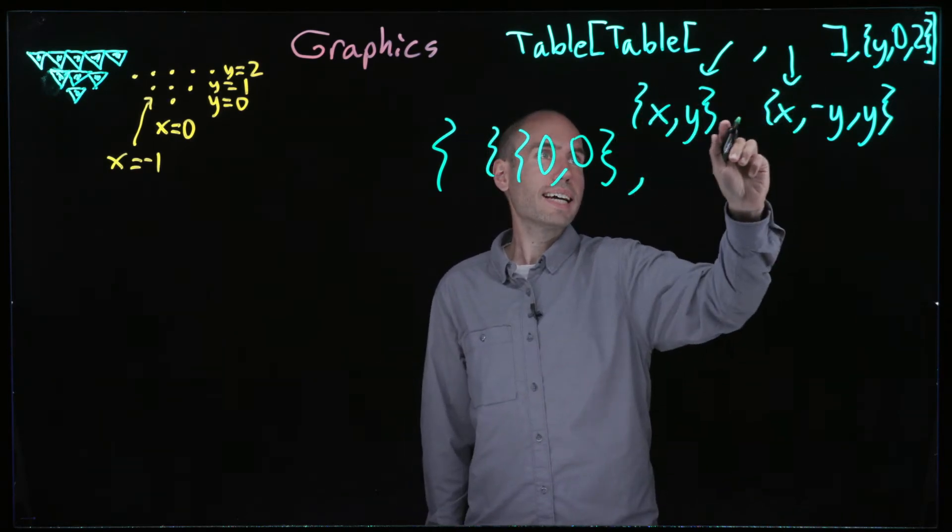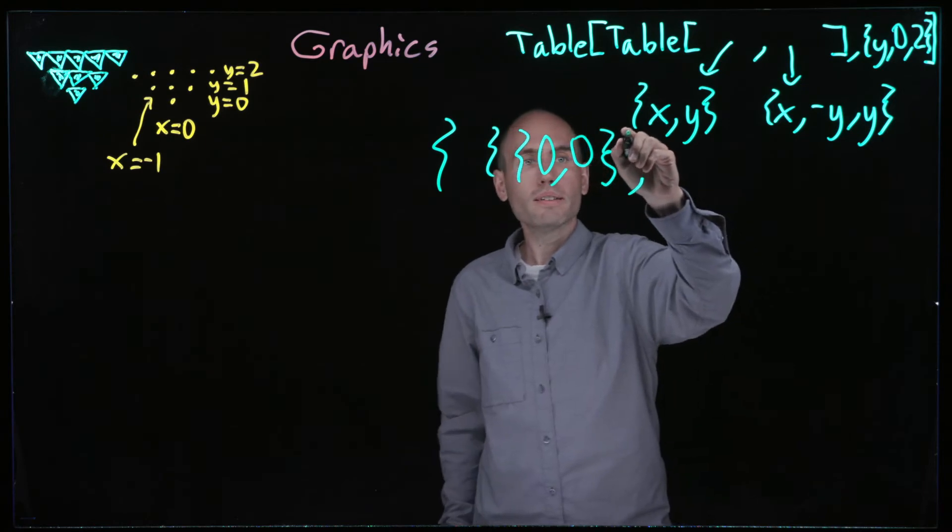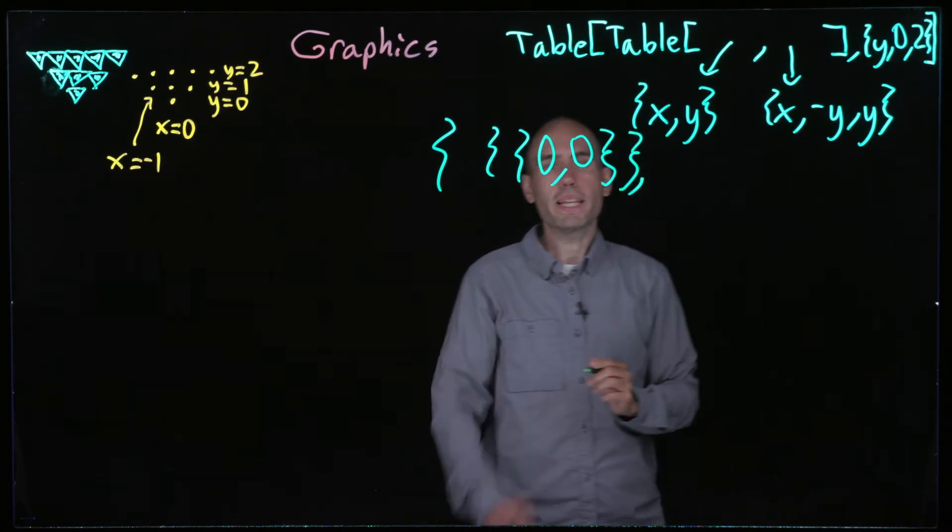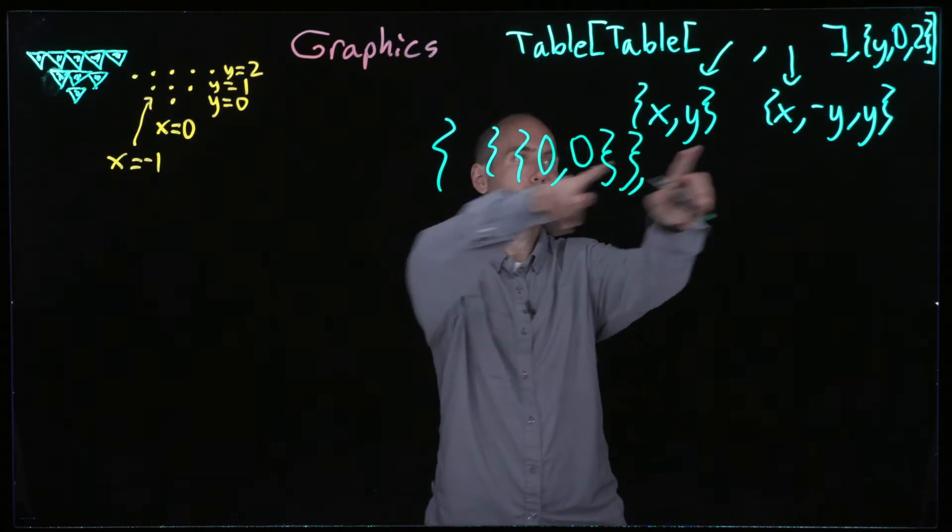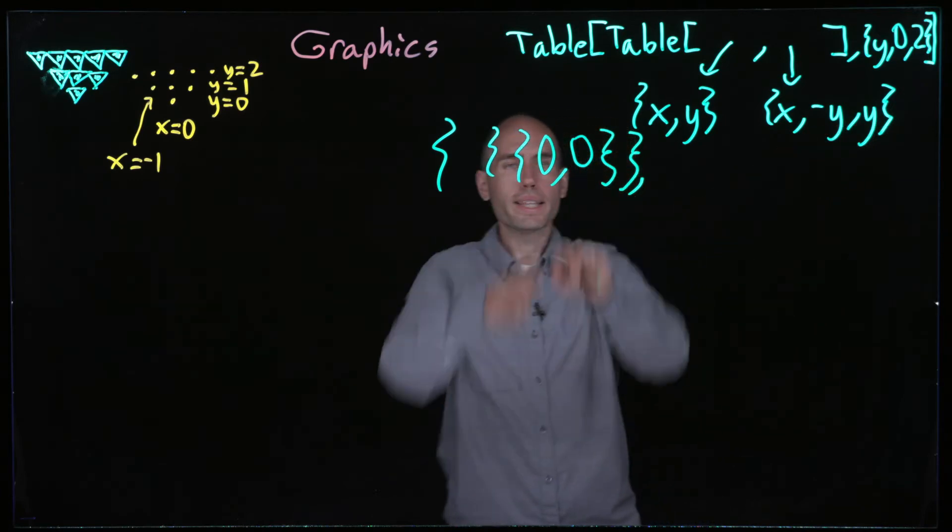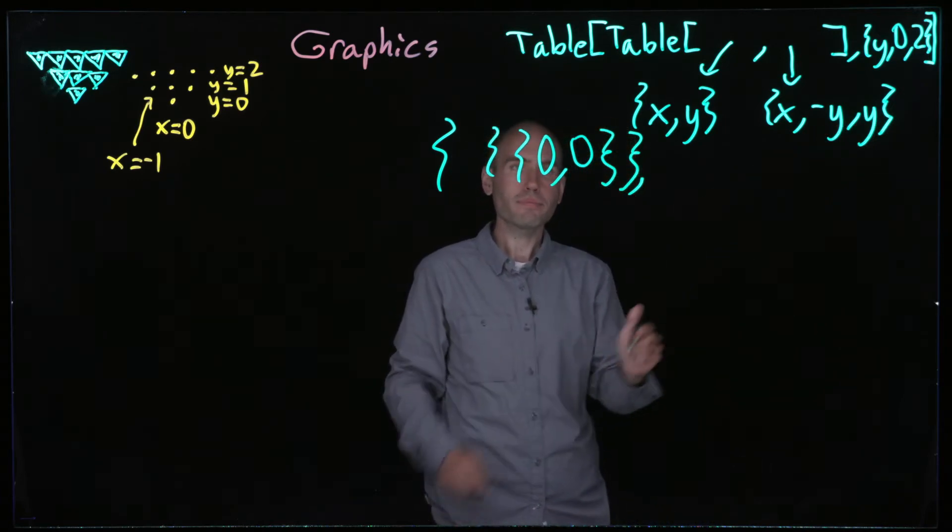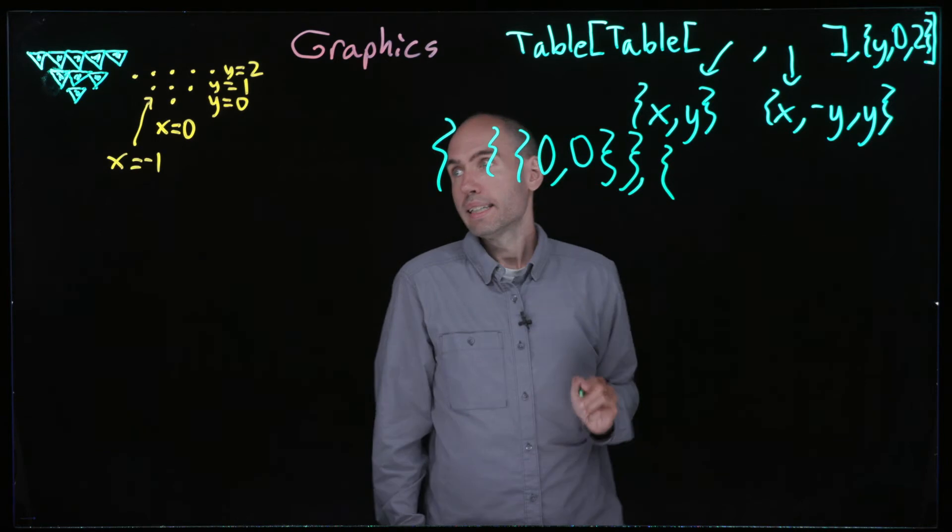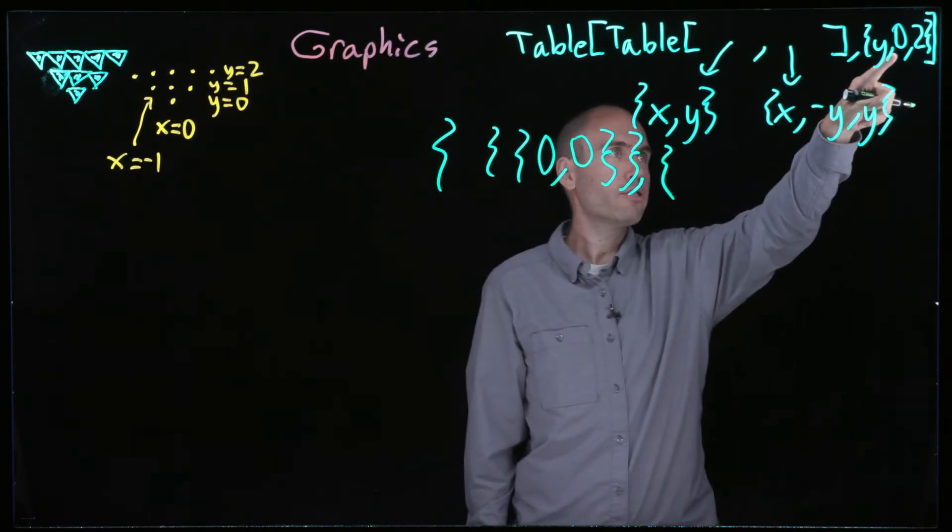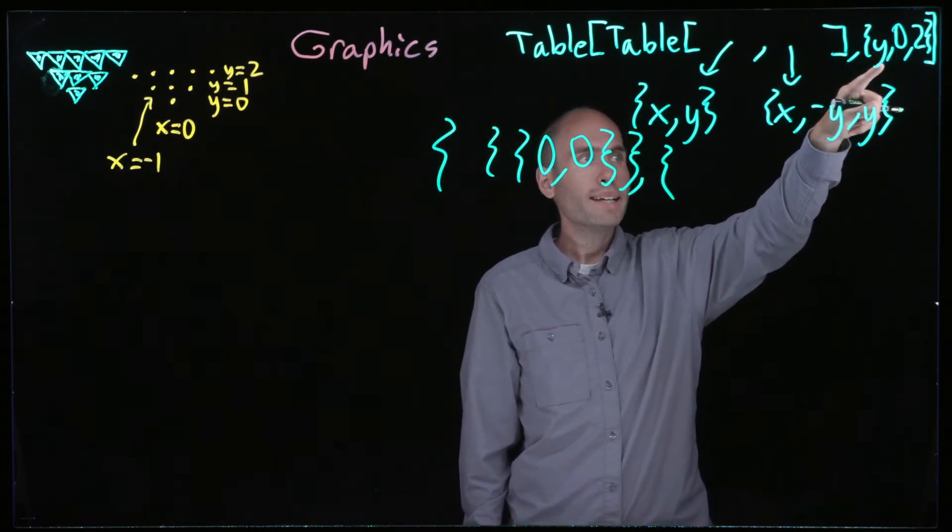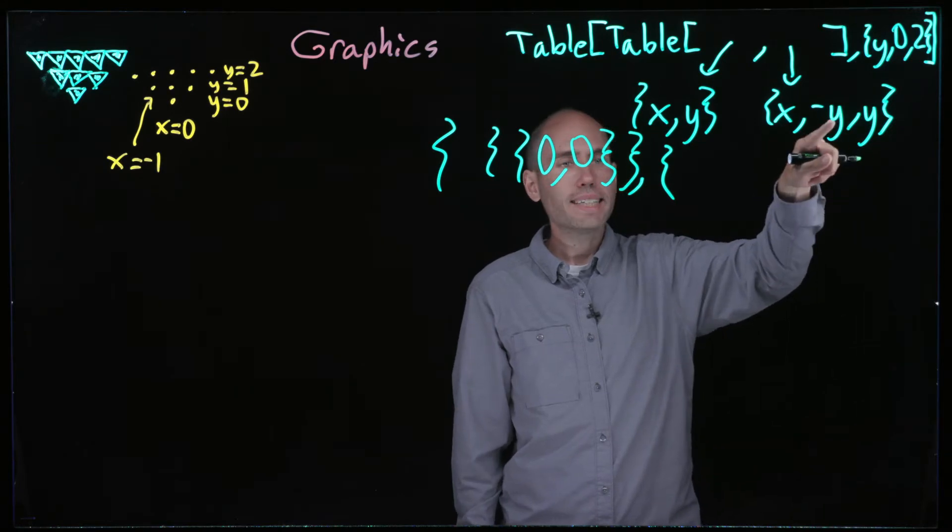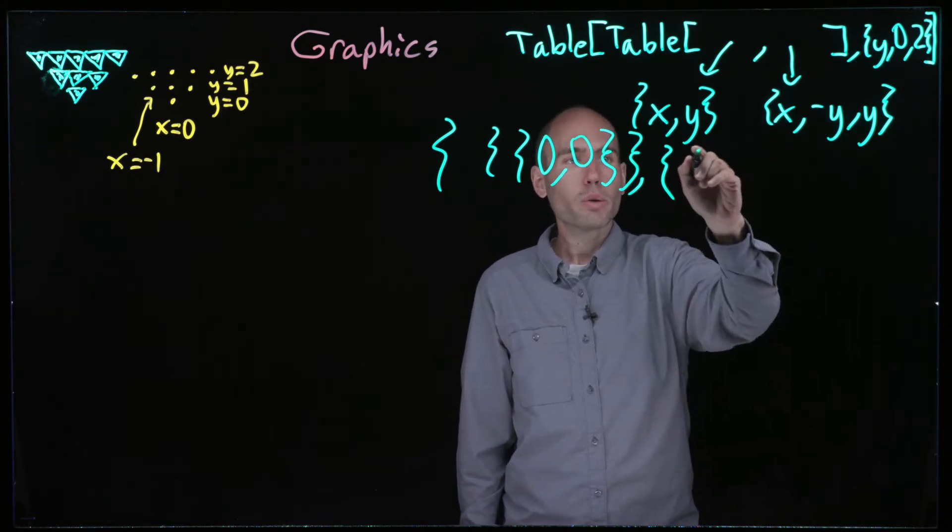So this inner table is going to just be this little length one list, x from zero to zero with just this one point in it. Then the next one, this is probably more interesting, y is equal to one, x starts out at negative one, so we're going to have this point negative one, one.